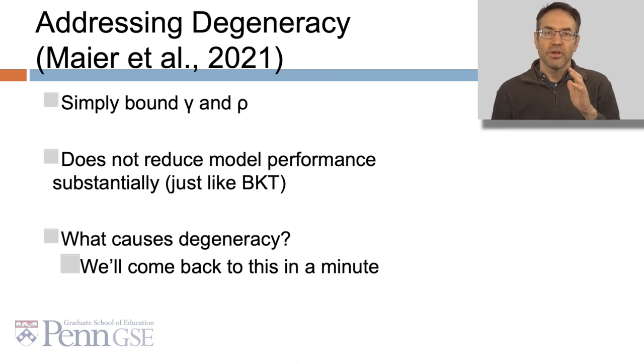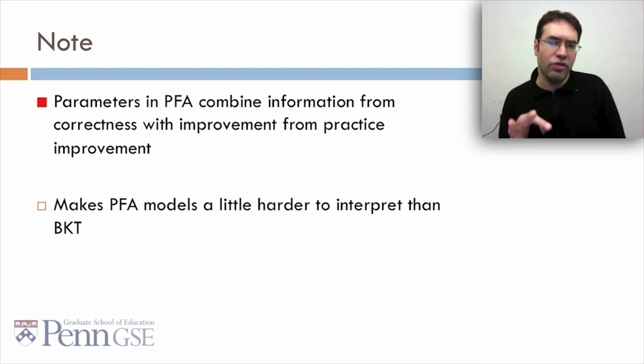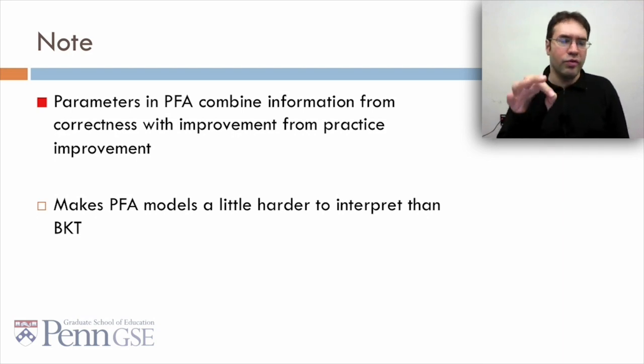So how do you address degeneracy? There's a simple approach in Meyer et al., which is you bound rho and gamma. And just like BKT, that doesn't reduce model performance substantially, at least in that paper's data. Parameters in PFA combine information from correctness with improvement from practice. And this makes PFA models a little harder to interpret than BKT. Nothing wrong with it, just you have to think a little more deeply.